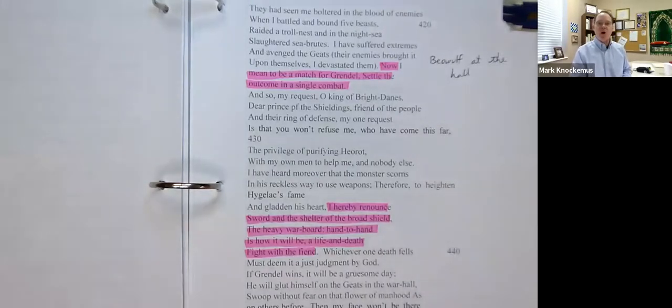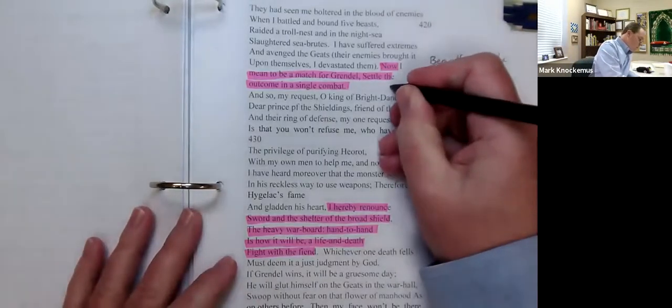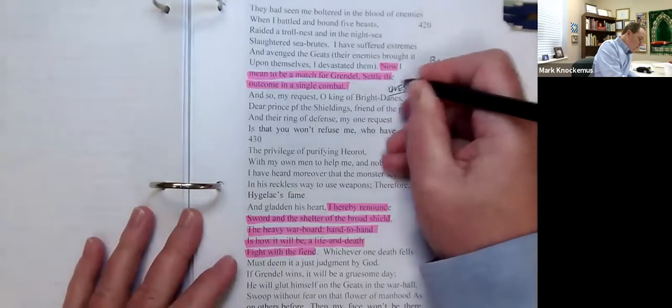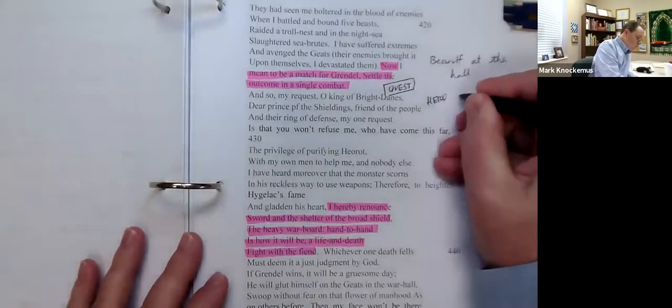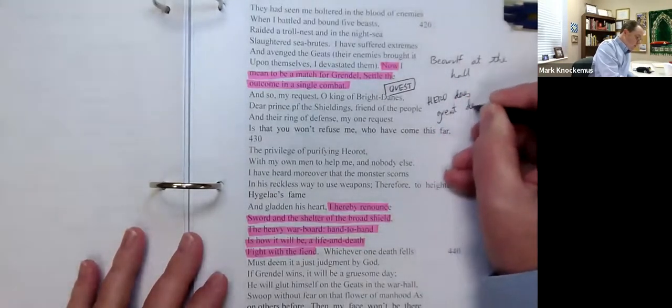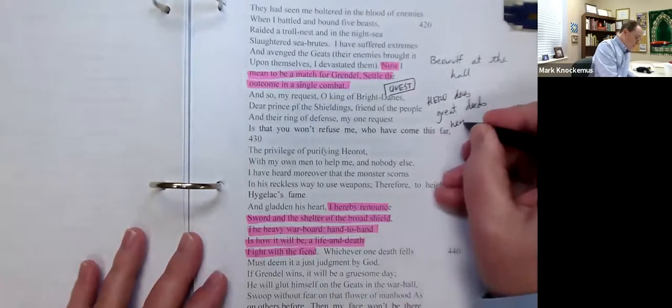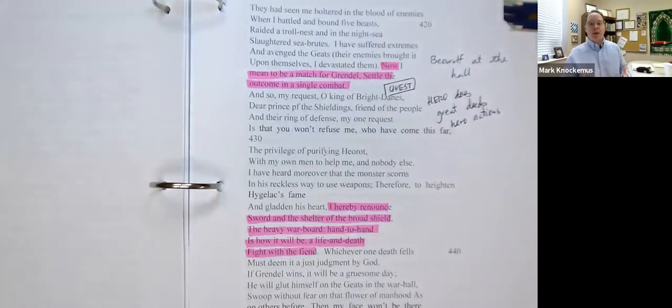Beowulf is now at the Great Hall. Now, I mean to be a match for Grendel. Settle the outcome in a single combat. What is this? This is part of Beowulf's quest. Of note, this is not Beowulf's land. This is not Beowulf's problem. That's something that a lot of readers overlook. He heard about this problem and he takes it on upon himself. So what does a hero do? A hero does great deeds. In other words, hero actions, heroic behavior.